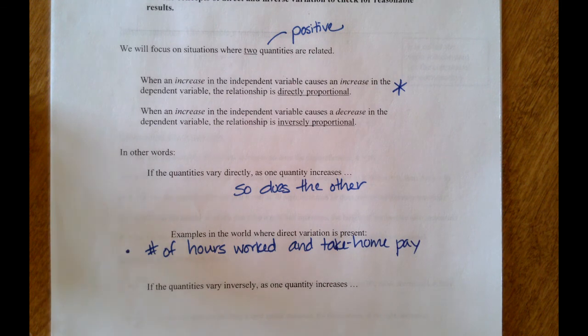That would be one example of direct variation. In a chemistry situation, if you consider temperature and volume of a gas, if you increase the temperature, the volume will also increase.